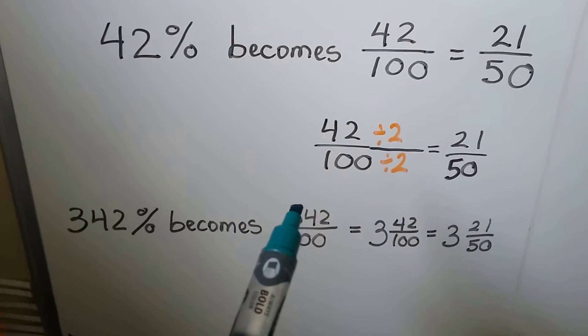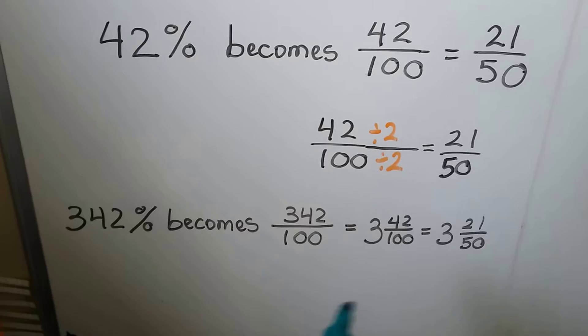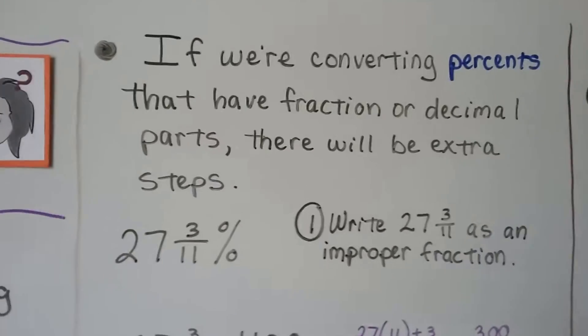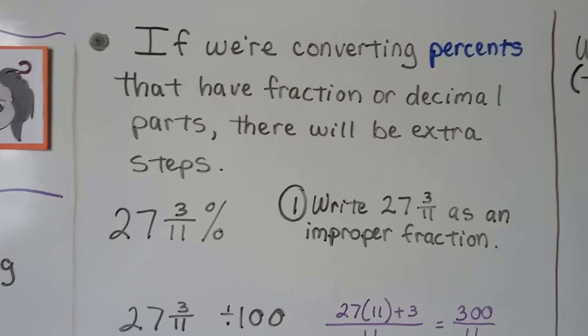You just take away the percentage sign, write it as the numerator, put 100 as the denominator, and then simplify it. If we're converting percents that have fractions or decimal parts, there's going to be some extra steps.